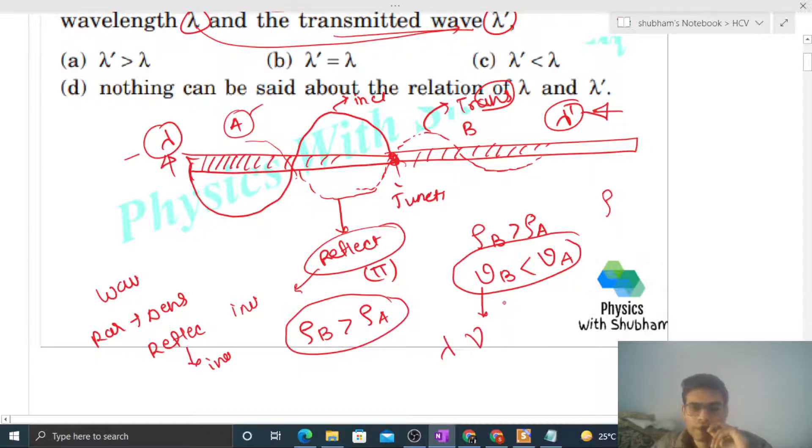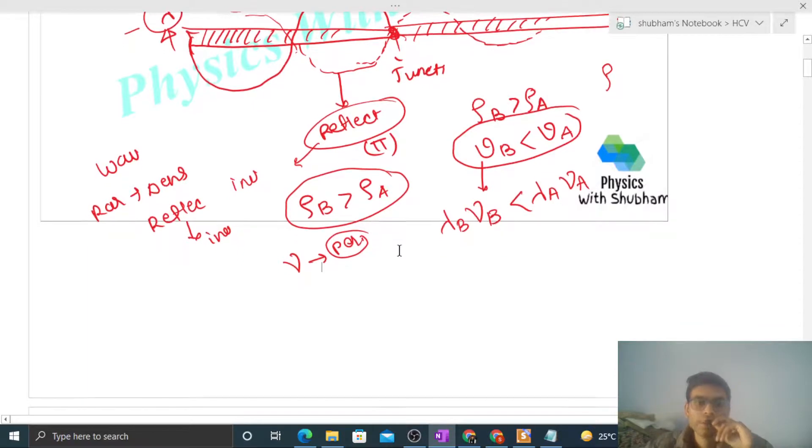So medium B mein wavelength and medium B mein frequency, isi tarah se medium A mein bhi hoga, right? Now aap dekho ki jo frequency hai, that is the property of the wave. Yeh change nahi hota, yeh medium pe depend nahi karta. You can say that frequency is the property of the wave. Yeh medium ke saath change nahi hota. It means jo frequency hoga medium A mein, that will be the frequency in medium B.